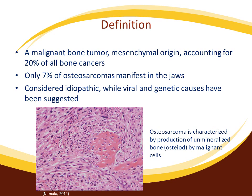In the current slide, you can see that osteosarcoma is often characterized by a production of unmineralized bone by the malignant cells.